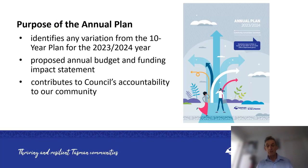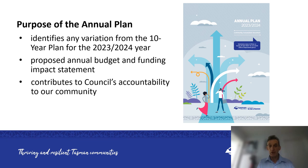The purpose of the Annual Plan is really to identify any variations from the 10-year plan for the 2023-2024 year. It proposes an Annual Budget and Funding Impact Statement — that's about where the funding comes from — and it's part of that accountability cycle.